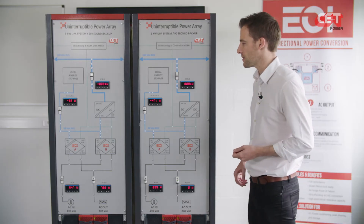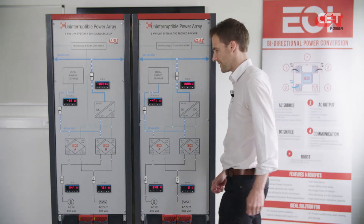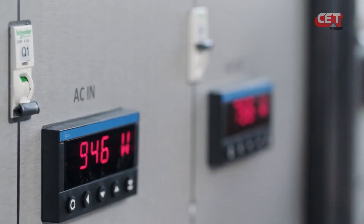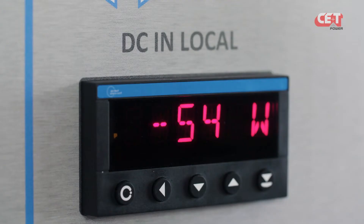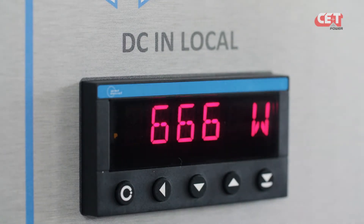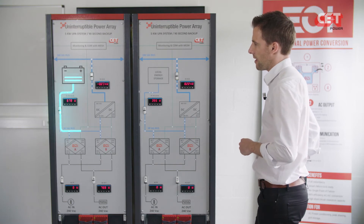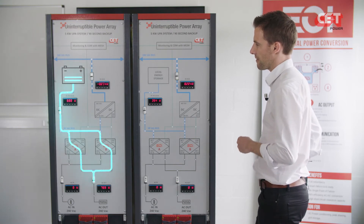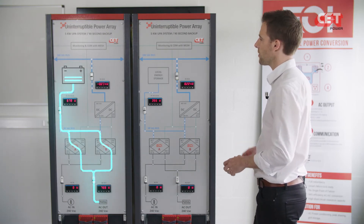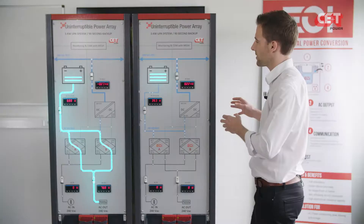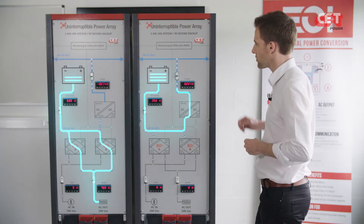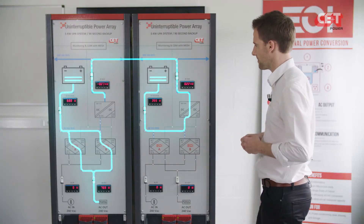We are now going to simulate a loss of AC in on both cabinets. As you can see, the AC load is still fed by the battery of the left cabinets, but it is also supported by the battery of the right cabinets through the DC bus. So, even by limiting the battery's capacity, you can ensure the best outage protection on the market.